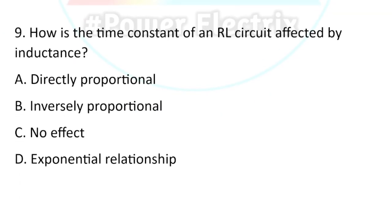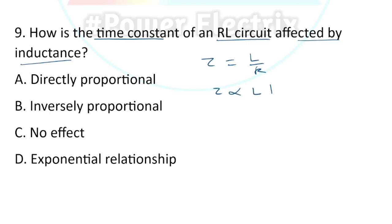Question number nine: How is the time constant of an RL circuit affected by inductance? The time constant tau in an RL circuit equals L upon R, so tau is directly proportional to L. If L increases, tau increases; if L decreases, tau decreases. The correct answer is directly proportional.